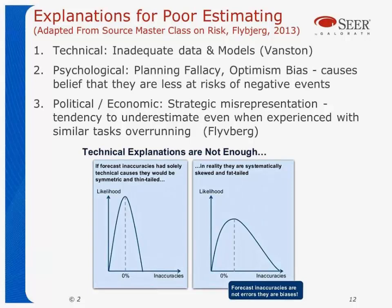And then there's political and economic bias. Somebody says, 'I need this done in two years and for $6 million — what's your estimate?' Well, if your estimate isn't two years and $6 million, the answer is usually 'we'll find somebody else who can' — who then fails.